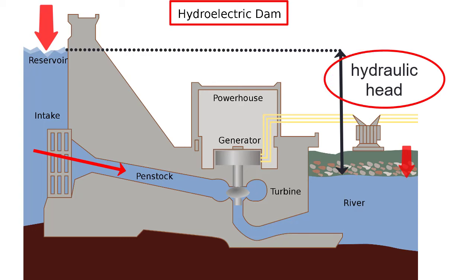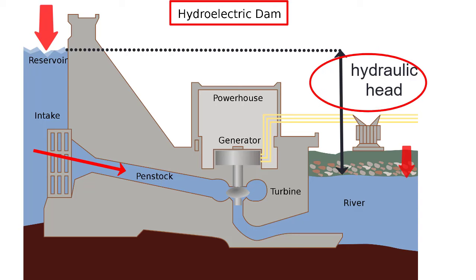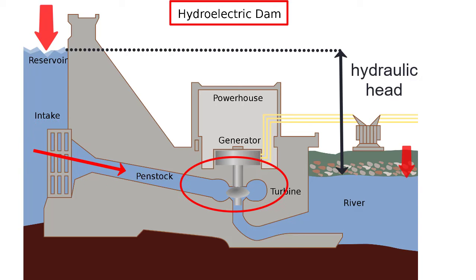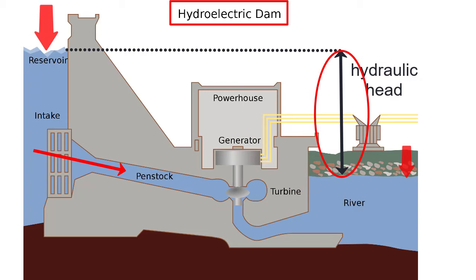When we dam a river, we're using this hydraulic head to produce energy. As the water from behind the dam moves through the dam, it pushes blades in a turbine. The vertical difference between the water level at the high pressure point and the water level at the low pressure point is the potential energy that drives the motion of the water down the hill.